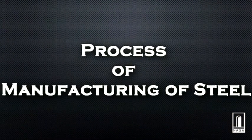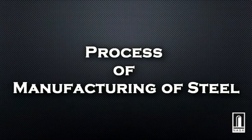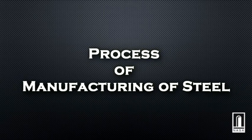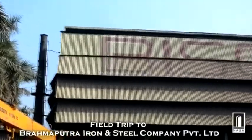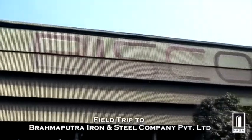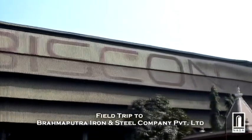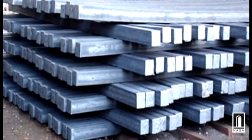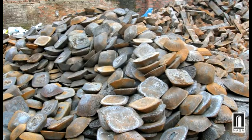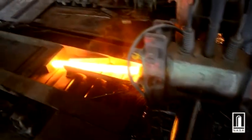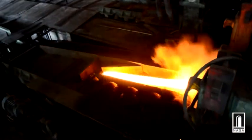Let us now see how the process of manufacturing of steel takes place. The process of manufacturing of steel requires billets which are manufactured with a combination of sponge iron, pig iron, MS scrap, and certain chemicals like carbon, manganese, sulphur, and phosphorus at different proportions.